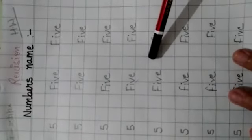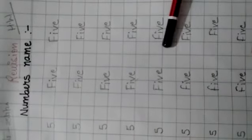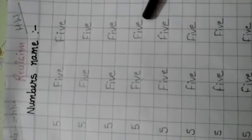This one also you have to do in your copy. And forward counting also from 1 to 50. And try to learn the spellings from 1 to 5. This is your homework.